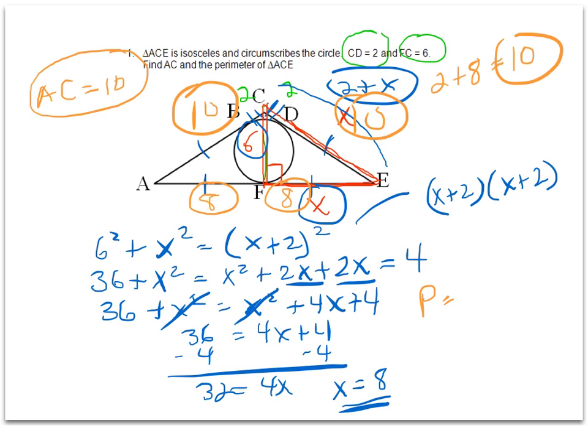So P for the perimeter, 10 plus 10 plus 8 plus 8. That gives me 36, and I'll just put that up on top as well. The perimeter equals 36.